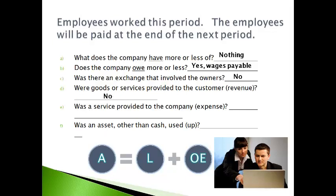No goods or services were provided to customers. Employees did work and provided a service to the company. No assets were used up. An account that represents employees is owed, called salaries payable, and an expense that describes employees worked, salaries expense, will be reported on the financial statements.